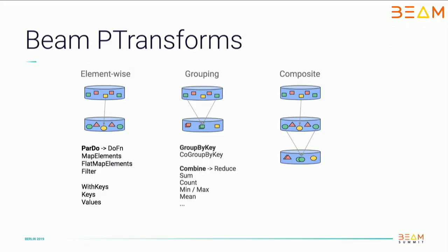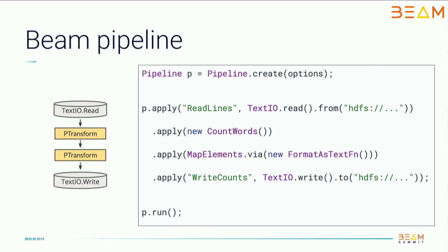Beam already provides a set of different PTransforms which we can roughly split into three groups. The first is a map-like PTransform, which provides different ways to map elements one-to-one. Another group is a group-by-key-like transform. Using them we can create composite transforms, which are usually what your I/O transform is. A classical example is word count: a pipeline of four transforms where we read data from HDFS in text format, count words, prepare data for output, and write results back into HDFS. So we have two user PTransforms plus the ones used by TextIO for read and write.